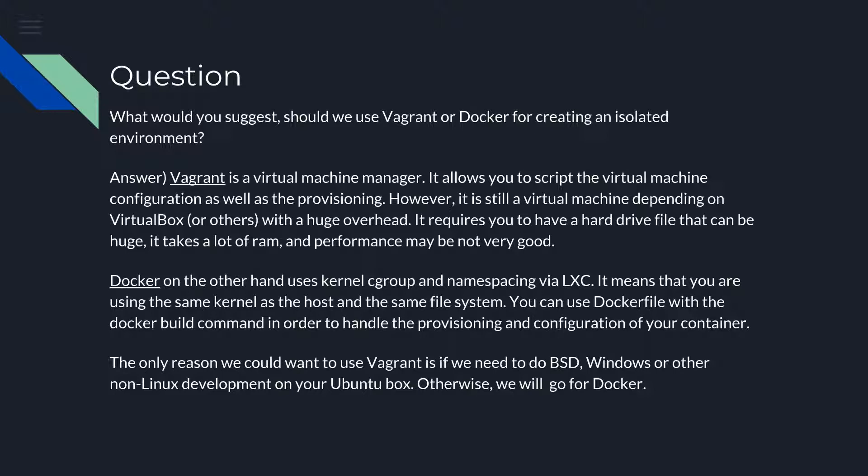Docker, on the other hand, uses kernel cgroups and namespacing via LXC. LXC is Linux Containers. It means that you have to use the same kernel as the host and the same file system. You can use a Dockerfile with the docker build command in order to handle the provisioning and configuration of your container.